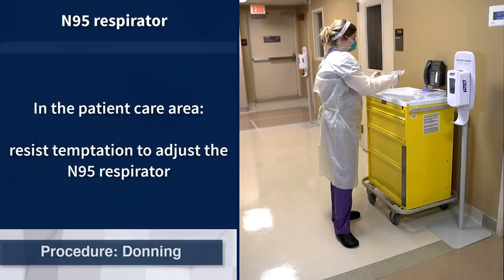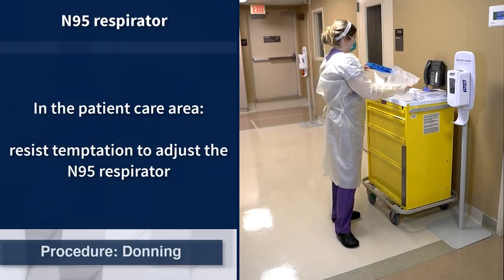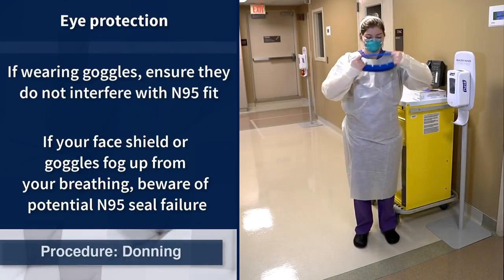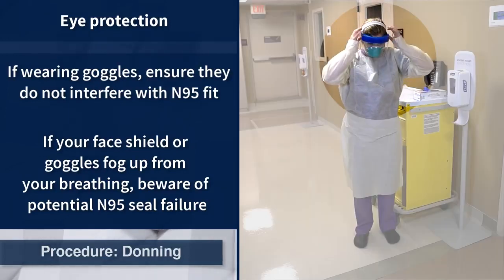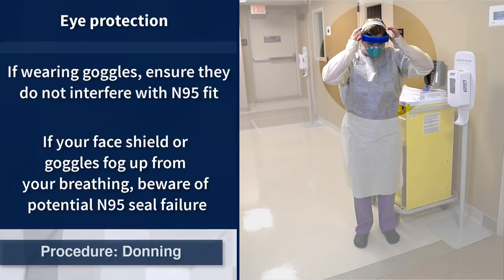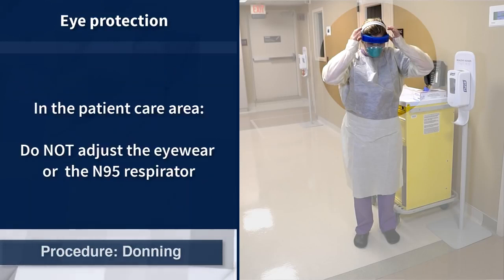Staff must resist the temptation to adjust the N95 respirator while wearing it in the patient care area. If the PPE ensemble includes a face shield for eye protection, put it on so that the foam headpiece rests on the forehead. If goggles are worn, ensure they sit comfortably and securely over the eyes and do not interfere with the fit of the N95 respirator. A face shield or goggles will need to fit over eyeglasses. If the face shield or goggles fog up due to breathing, it is likely the N95 respirator does not have a proper seal. At no time should eye protection or the N95 respirator be readjusted while the health care worker is in the patient care area.